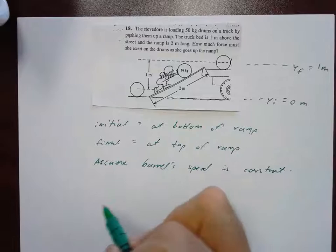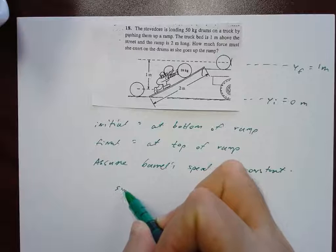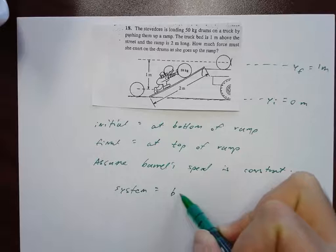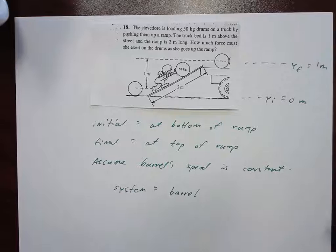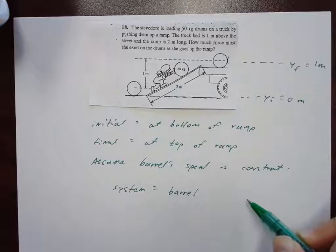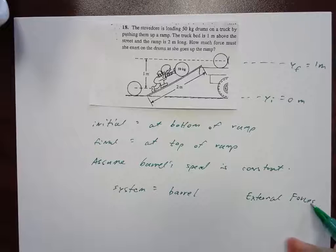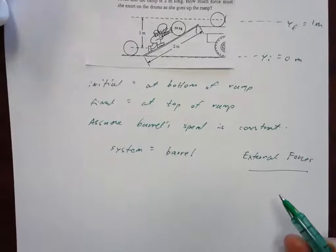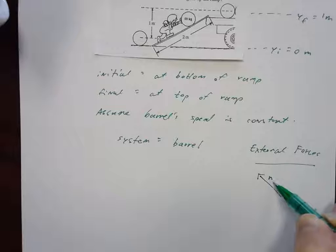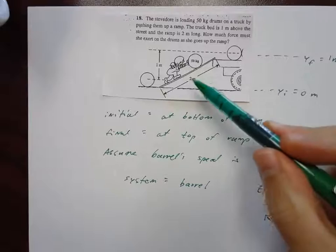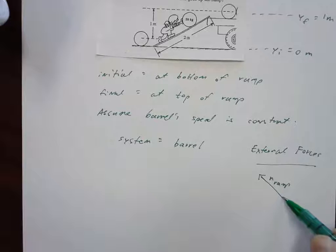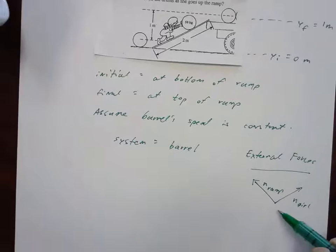We're going to find the force. When we do work and energy, we always have to think hard about what should be the system. We're going to work this problem two different ways. In the first way, we're just going to make the system the barrel, which clearly has to be in the system since that's who's moving up the ramp. Then we need to think about the external forces on that system. For the system of the barrel, we're going to make a force diagram. We have a normal force from the ramp. She's pushing parallel to the ramp, so I'll put a force parallel to the ramp — I'm going to call that N of girl. Then we have mg.